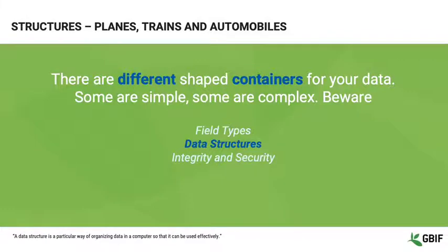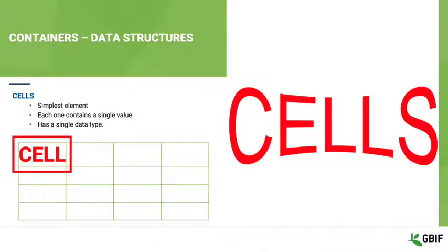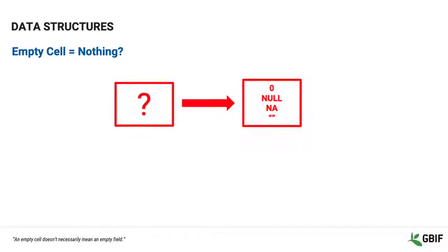Now that you have an understanding of the field types used to represent your data elements, let's talk about the containers or structures that many database programs and software use to collate and display your data. First is the cell. This is the smallest data structure. It holds a single value and has a single data type associated with it. One concept to be aware of is the empty cell — an empty cell doesn't necessarily mean an empty field. Some software fills an empty field with a system value based on the data type, such as null, NA, or even zero.